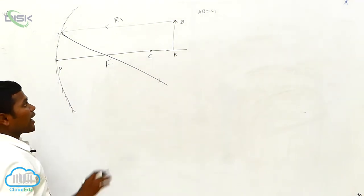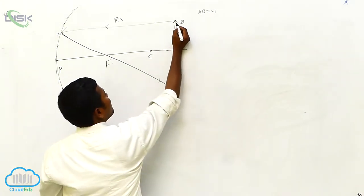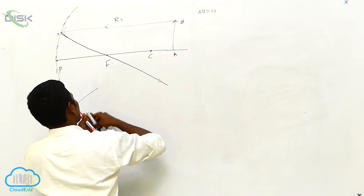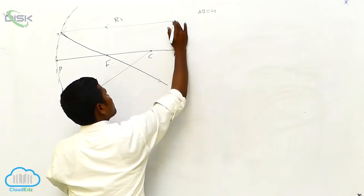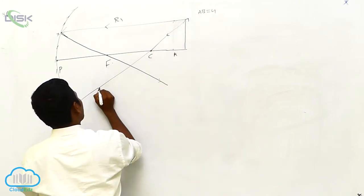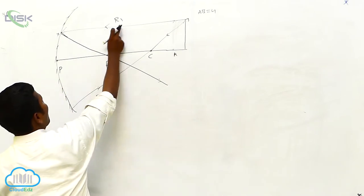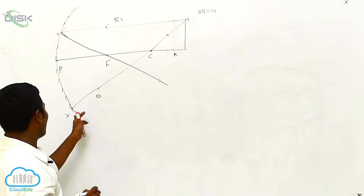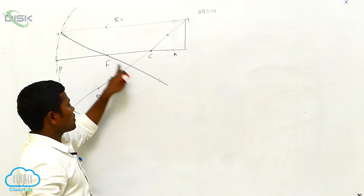Next I am considering R3 ray — you can consider R2 also or R3; that is your choice. For convenience I am considering R3 ray. This is R3 and this is R1. After striking on the mirror, R1 strikes at point X, and R3 strikes at point Y.